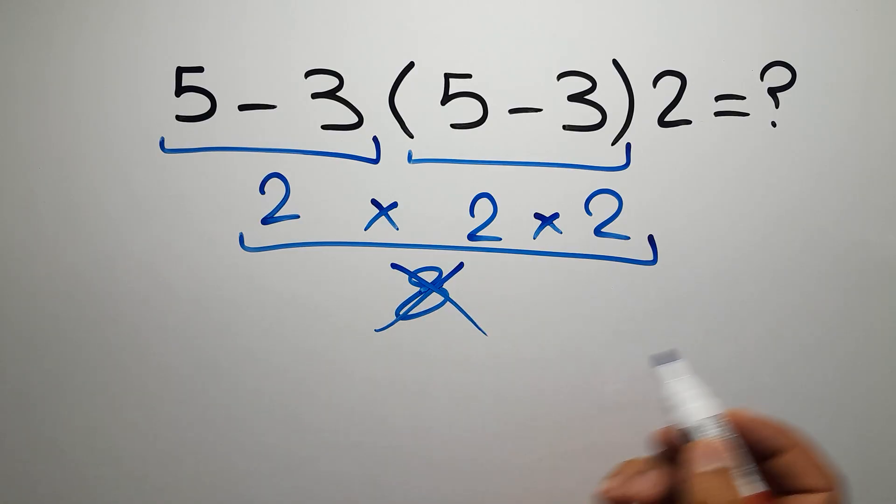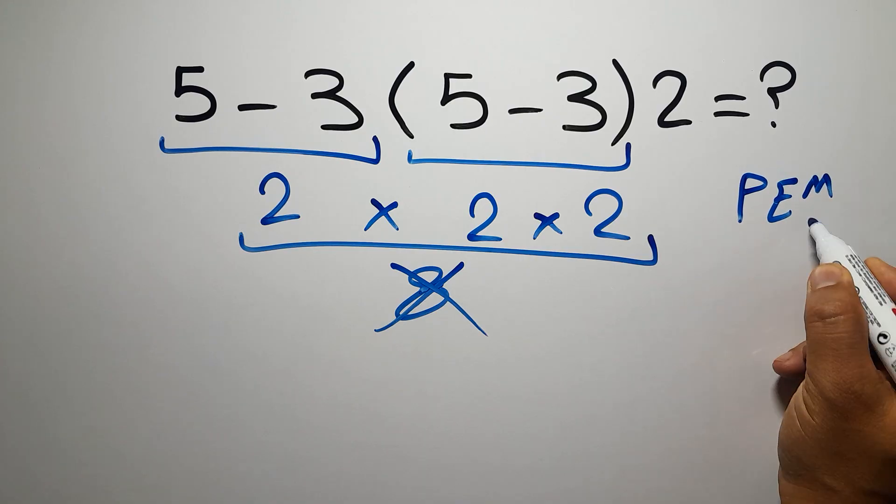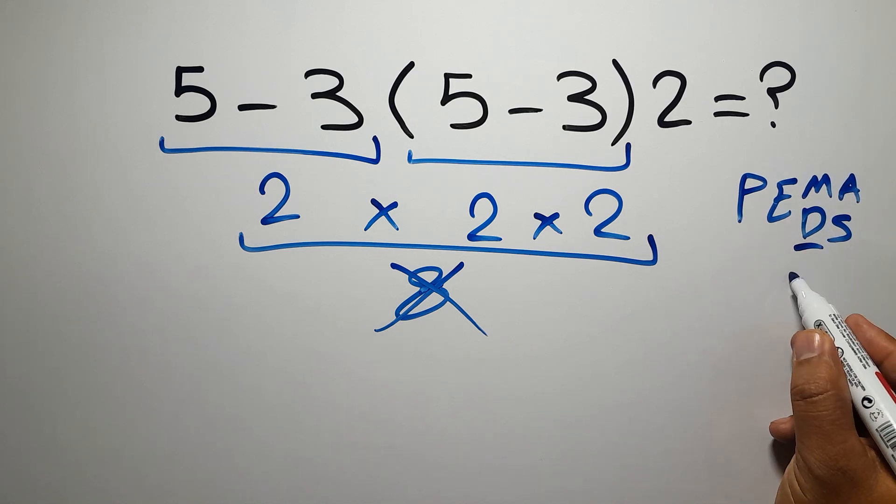Because according to the order of operations, first we have to do parentheses, then exponents, then multiplication or division, and finally addition or subtraction. Remember that multiplication and division have equal priority and we have to go from left to right, and the same applies to addition and subtraction.